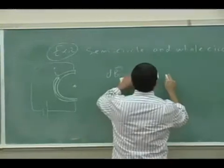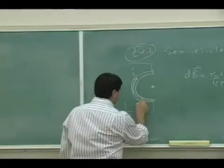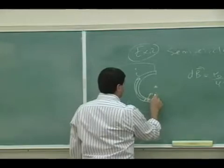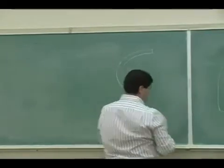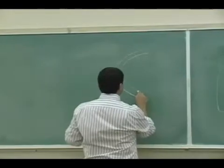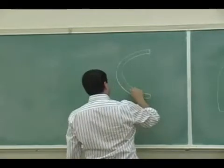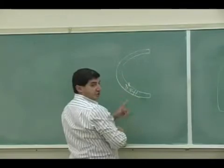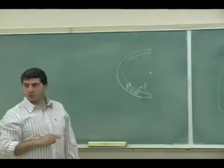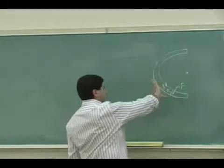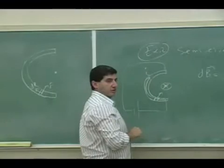It's going to be r hat, but now dl crossed into r hat over r squared. Remember r hat is a unit vector. You take a little piece here, r hat is a unit vector. The little piece dl is the vector like this going in the direction of i, and then r hat is a unit vector facing towards the point. The cross product of dl crossed into r hat is into the board, so it's going to give you a vector into the board as far as direction wise.